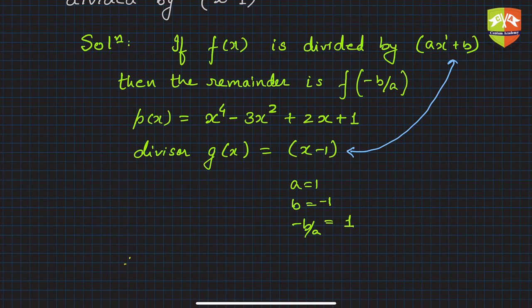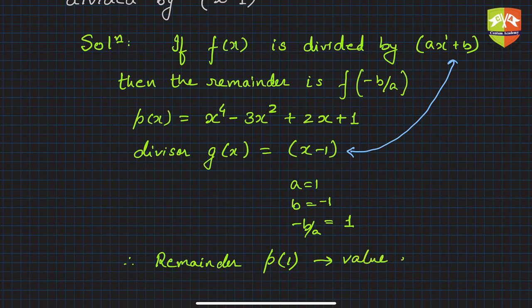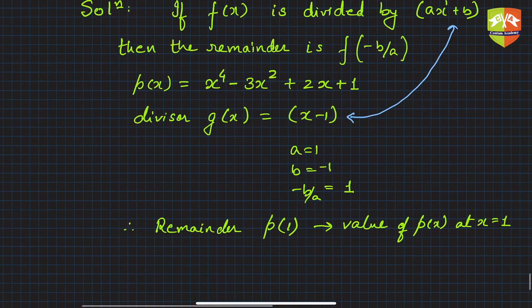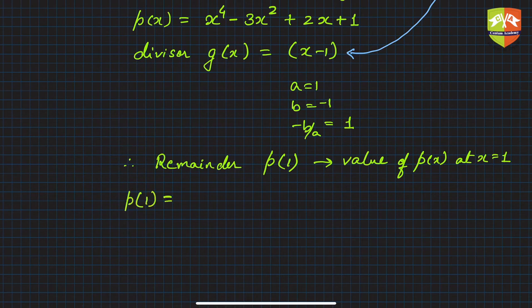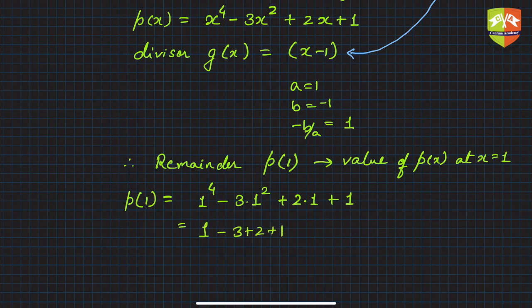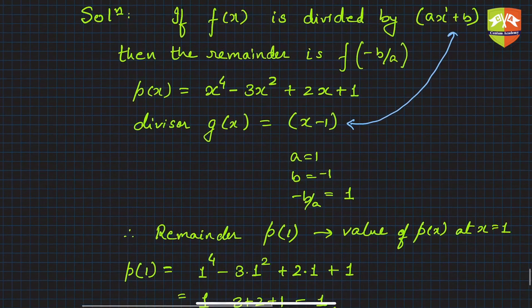Therefore, the remainder is p(1), which means the value of p(x) at x = 1. Let's find p(1): p(1) = 1^4 - 3(1)^2 + 2(1) + 1. Calculating this: 1 - 3 + 2 + 1 = 1. So if you divide this polynomial by (x - 1), you don't need to perform actual division—the remainder is 1.